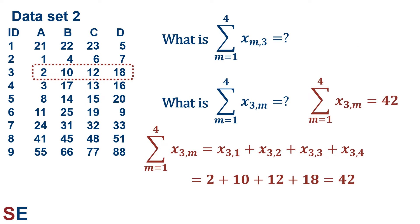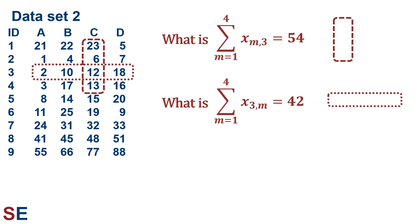For our second summation, m goes from 1 to 4, but now it's the second subscript in x_{3,m}, so m represents the columns. That gives x_{3,1}+x_{3,2}+x_{3,3}+x_{3,4}, represented by the dotted rectangle in the data table. That's 2+10+12+18 = 42. It's a useful exercise to look at a summation symbol and identify what region of the data table it references.